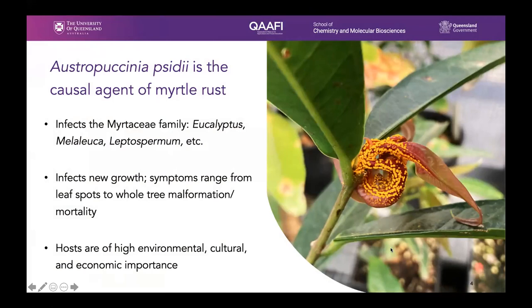Austropuccinia is the causal agent of myrtle rust. It infects plants of the family Myrtaceae, about 2,000 species of which are native to Australia. Myrtle rust infects primarily young or emerging tissue, and can also infect fruit, flowers, or seeds, impacting fertility and reproduction. Symptoms range in severity from leaf spots and blight to whole tree malformation and mortality in more extreme cases. Many myrtaceous plants are also of cultural importance due to their wide range of uses, from food and medicine to seasonal indicators.